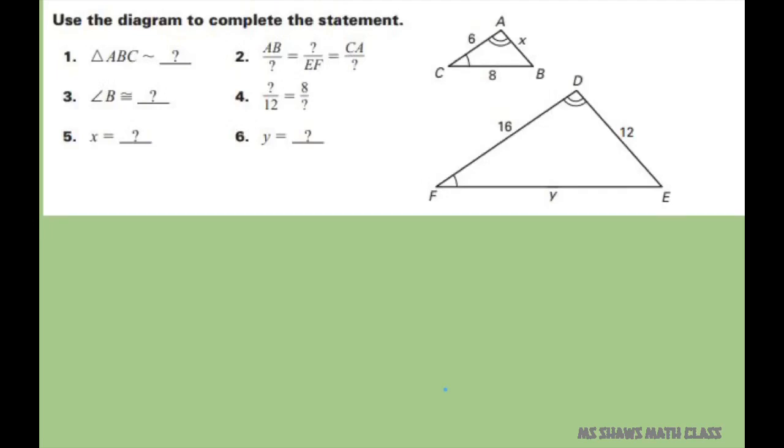So basically it says the first one, triangle ABC is similar to what triangle? And what you do is you go by the angles. Similar triangles have congruent angles.